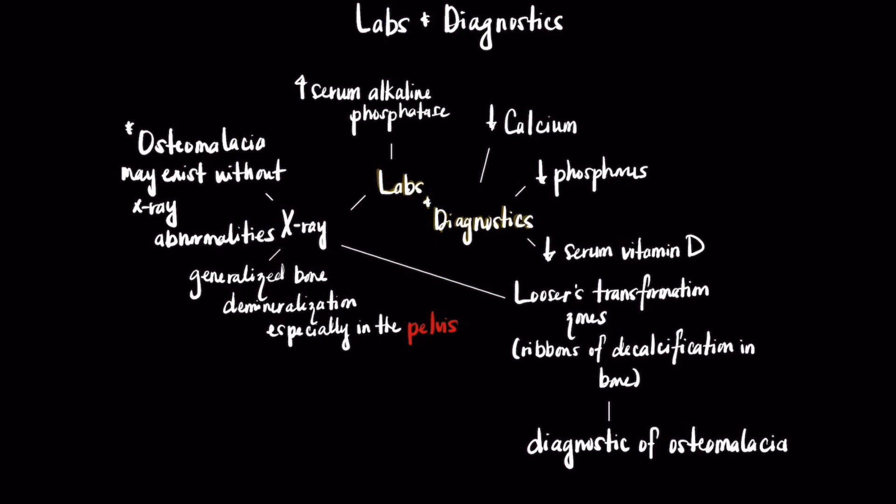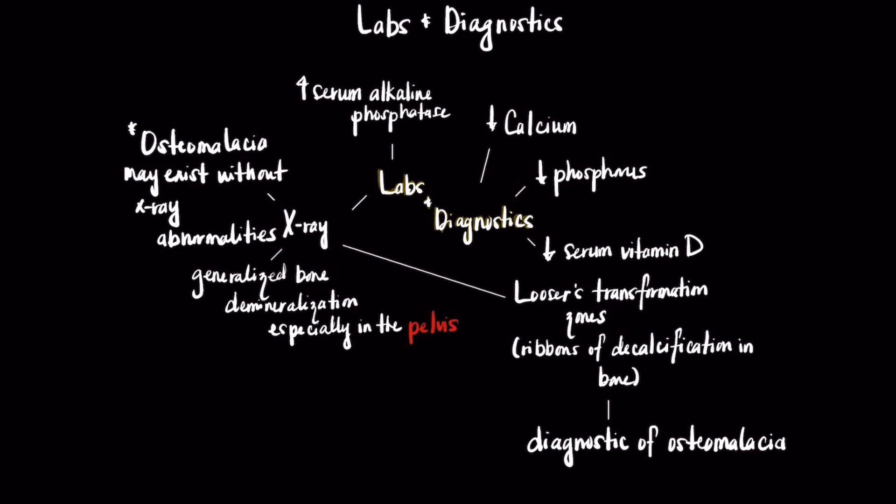On an x-ray, you would see generalized bone demineralization, particularly in the pelvic region. You would also see Looser's transformation zones, which are ribbons of decalcification in bone, and this is diagnostic of osteomalacia. It's important to note, however, that osteomalacia can exist without any evident x-ray abnormalities.